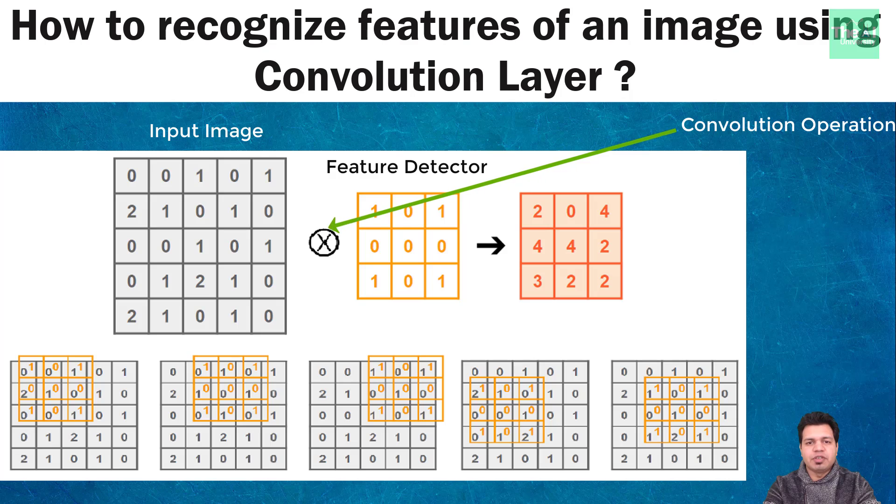Convolution operation is denoted by symbol X inside circle. In order to do this convolution operation, what you do is to put this feature detector on the input image just like you see below where orange feature detector is put on gray input image. Then you perform element wise multiplication of 9 pixel feature detector with a part of input it is currently on and then summing up the result into a single output pixel.